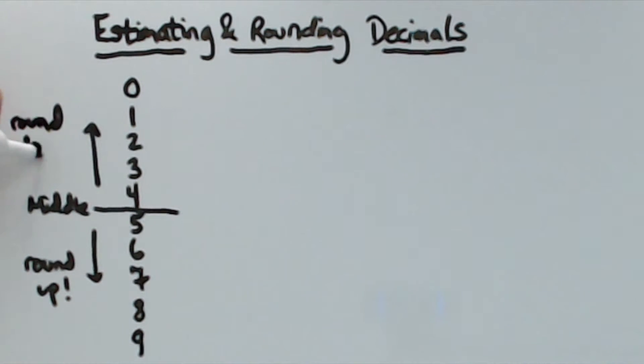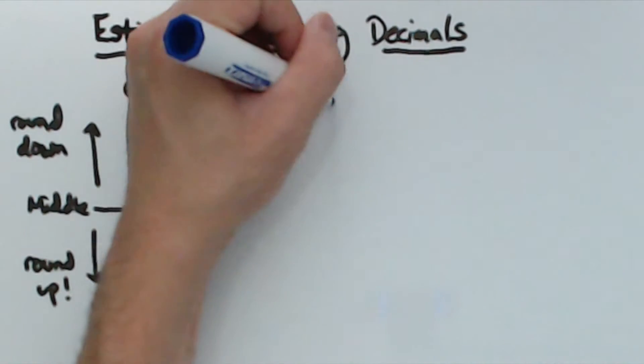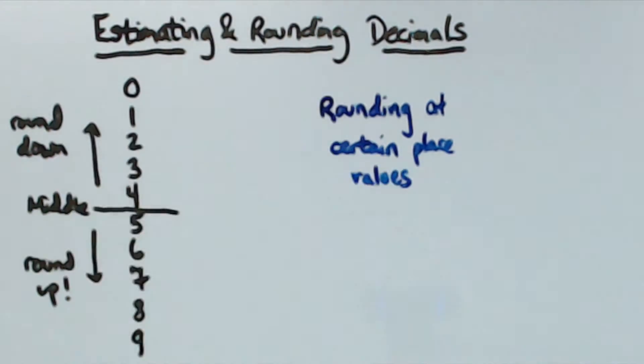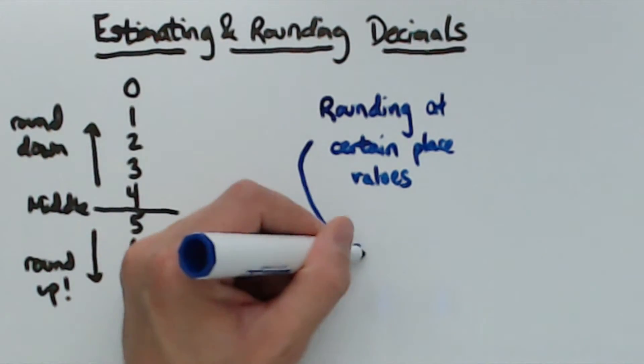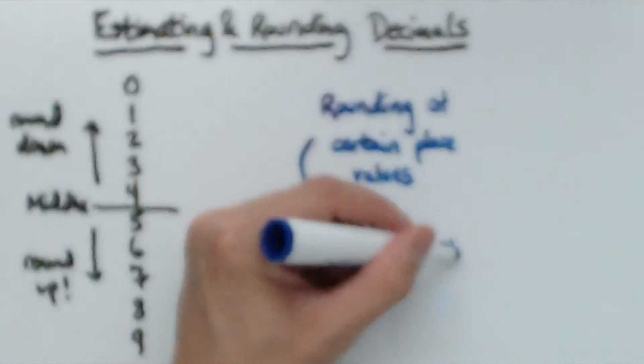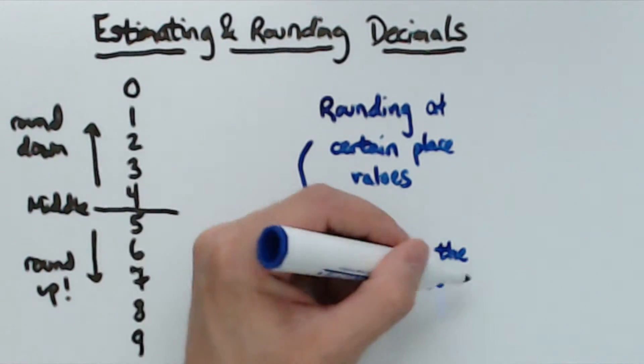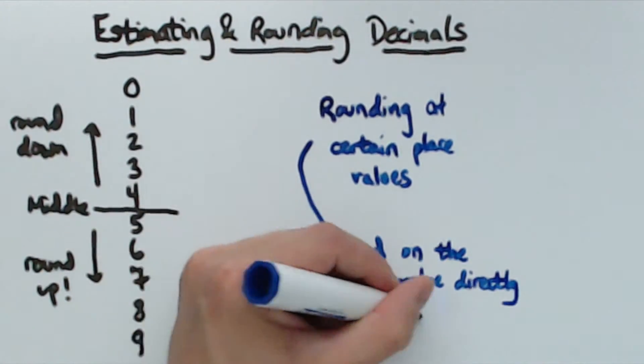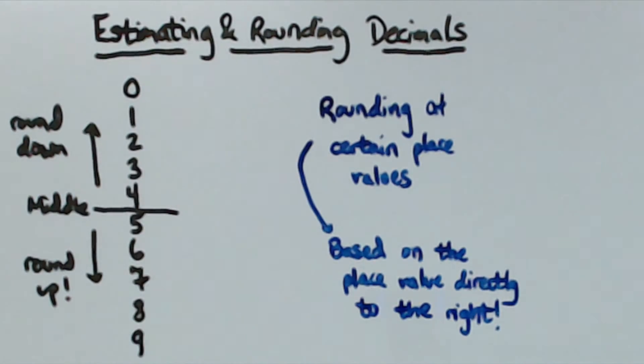If the number is 4 or less, the place value directly to the left is supposed to be rounded down. In contrast, if the number is 5 or more, that place value is supposed to be rounded up. The place value that is to be rounded is indicated in the problem. Whatever place value is to be rounded, the rounding is based off the number directly to the right of that place value.